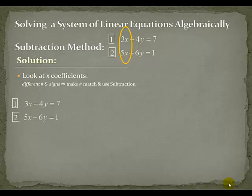The easy way to do this — here are my two equations. If I take a look at the coefficients, there's my 3x and there's my 5x. If I want these two numbers to match, the easy solution is to take equation 1 and multiply it by 5, and to take equation 2 and multiply it by 3.